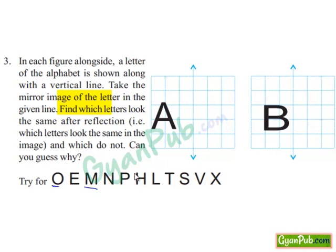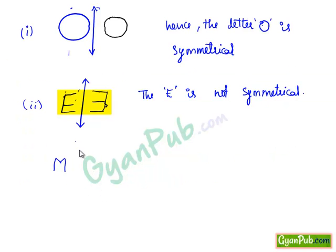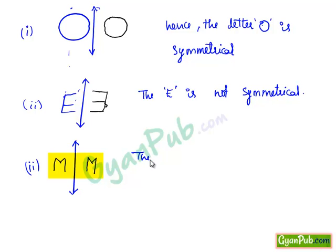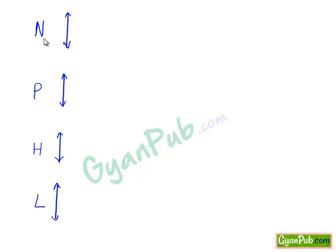Let's see another one — M. If we take the mirror image for the letter M, we get a similar M on the other side. Hence the letter M is symmetrical. Now if we see the letter N, the mirror image of N will be a reversed N. Hence the letter N is not symmetrical.